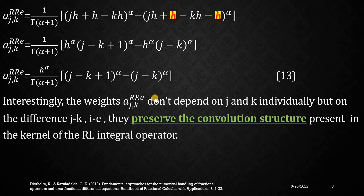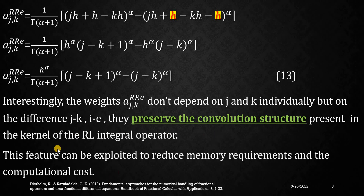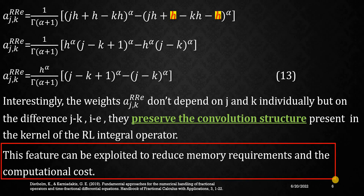Here h to the power alpha can be taken as a common factor, and you will obtain equation number 13. Now, these weights do not depend on j and k individually, but they depend on the difference j minus k, as was happening in the left rectangle product rule. This means that they preserve the convolution structure that was present in the kernel of the Riemann-Liouville integral operator. This feature can be used to reduce the memory requirements and the computational cost — this is a very important point when making numerical schemes.